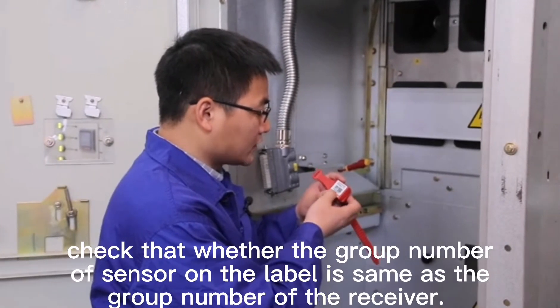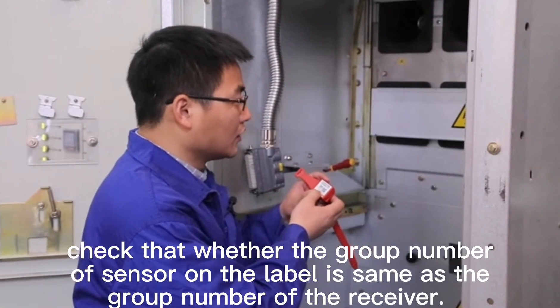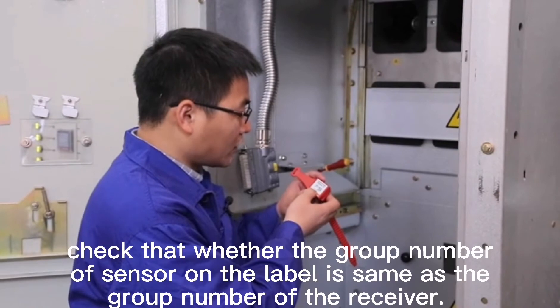Before installation, check whether the group number of sensor on the label is the same as the group number of the receiver.